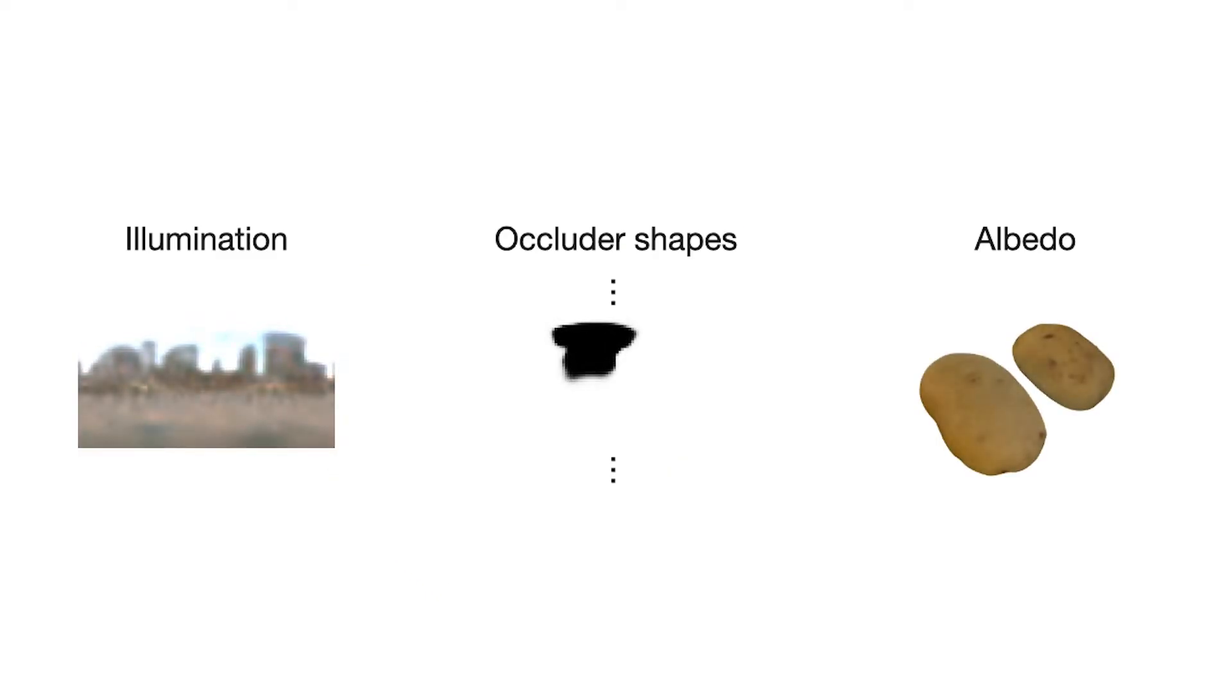Our method, which we call Eclipse, optimizes explicit representations of the environment illumination and observed occluder shapes in object materials through a differentiable Monte Carlo rendering procedure.